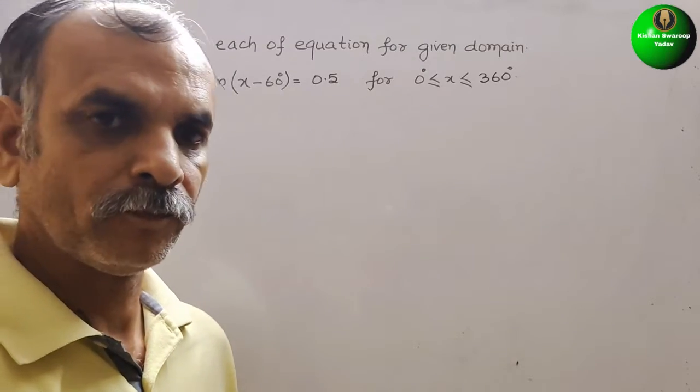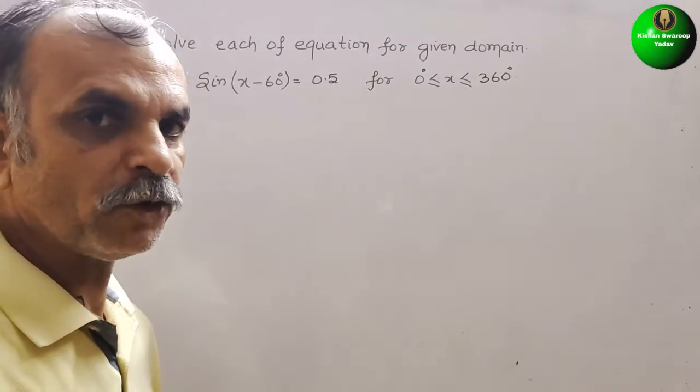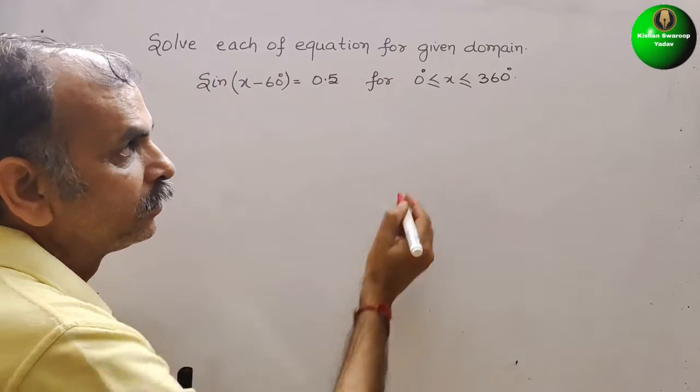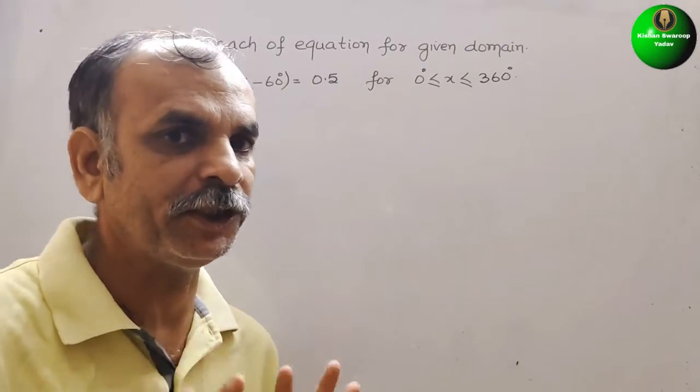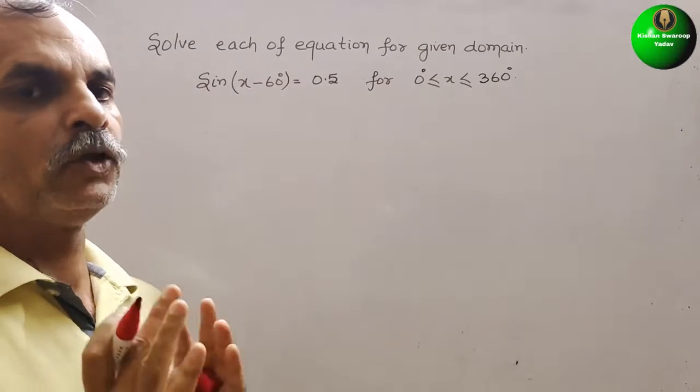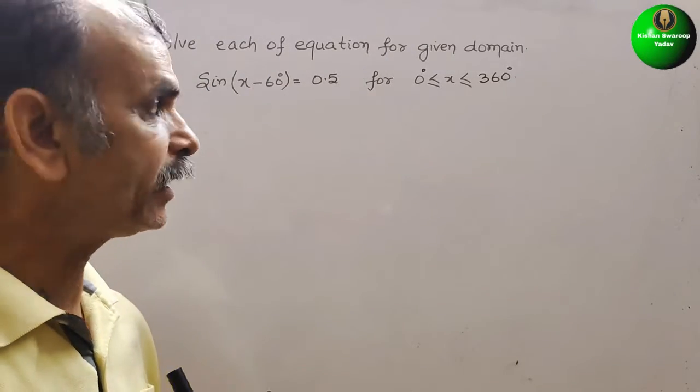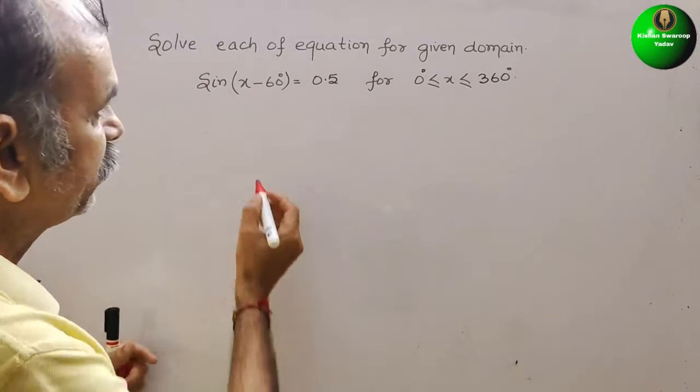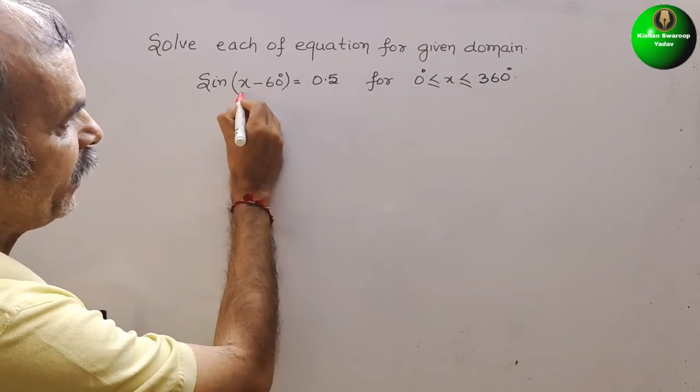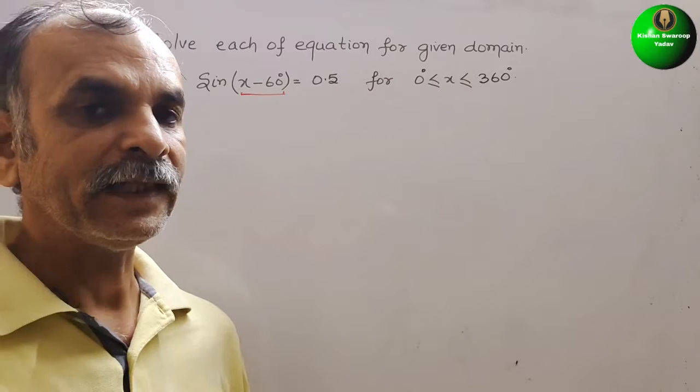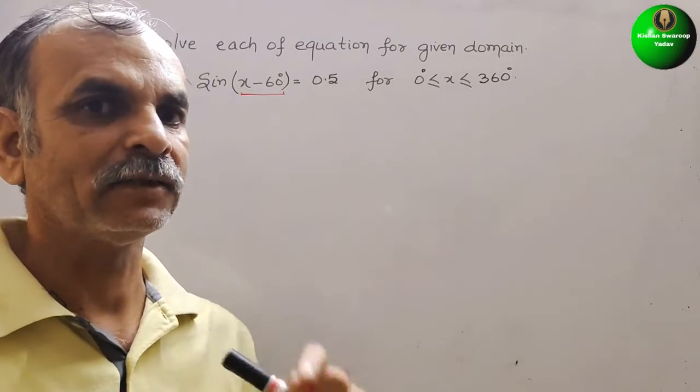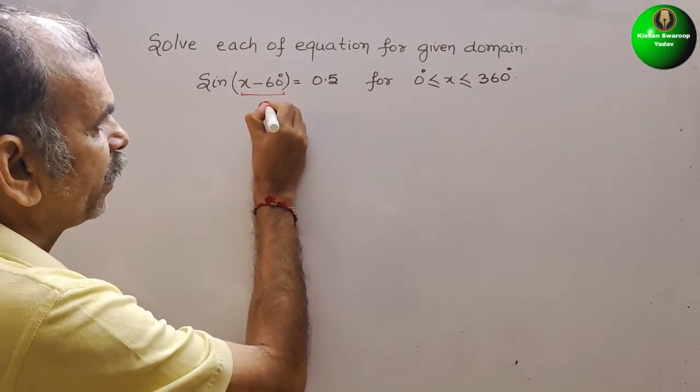So here you can see the domain, that means full, up to 360 degrees we have to see. So here what we have to do, see this. They have given this is the period x minus 60 degrees, that we will take it as theta.